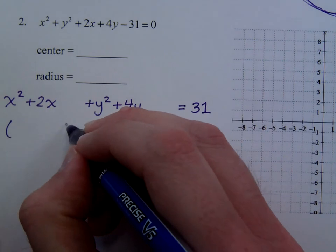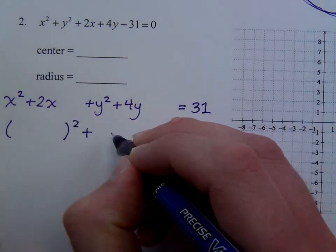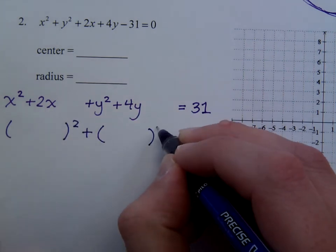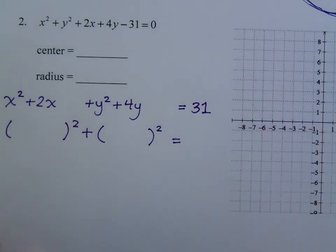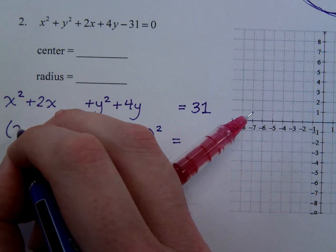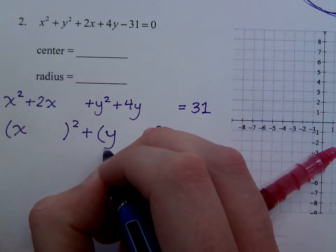Now, just like we did in the last problem, you know this is going to factor as a square. And this guy will also factor as a square. So, there's the x, and there's the y.